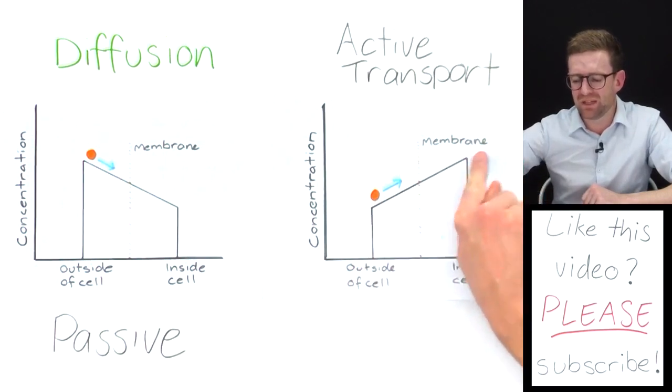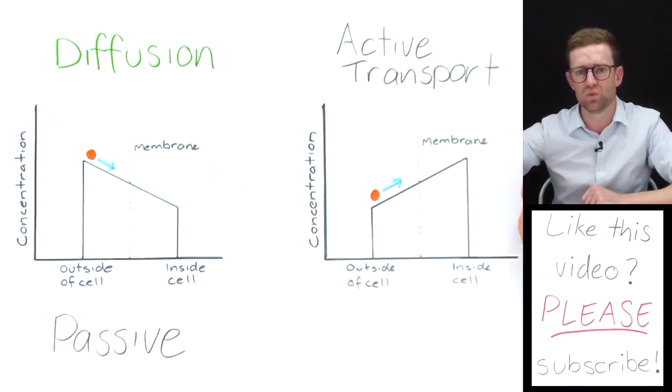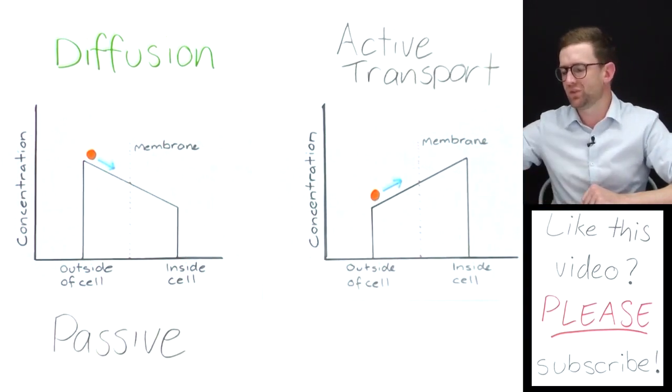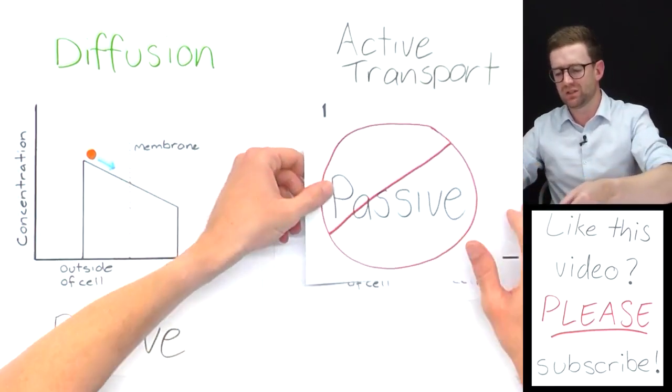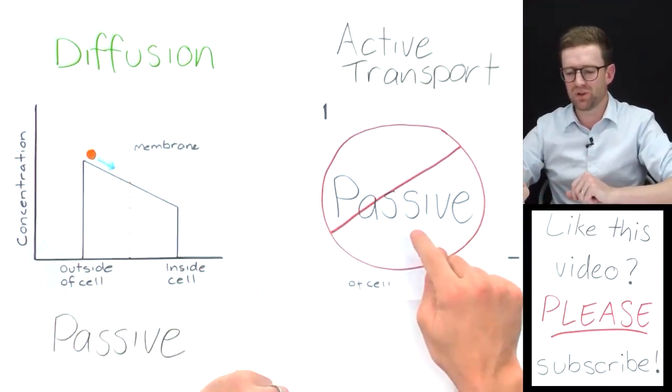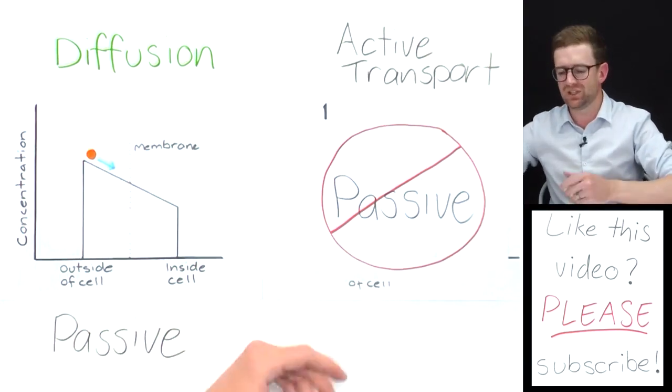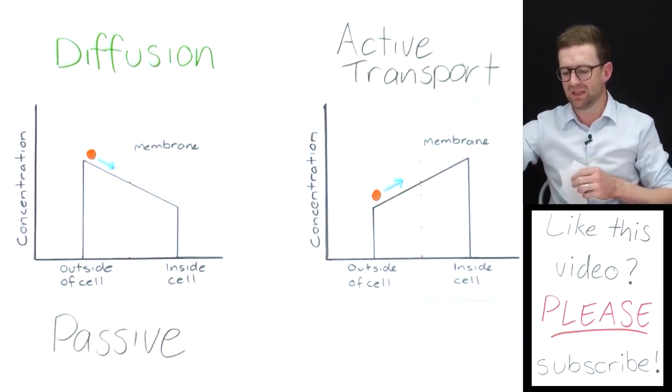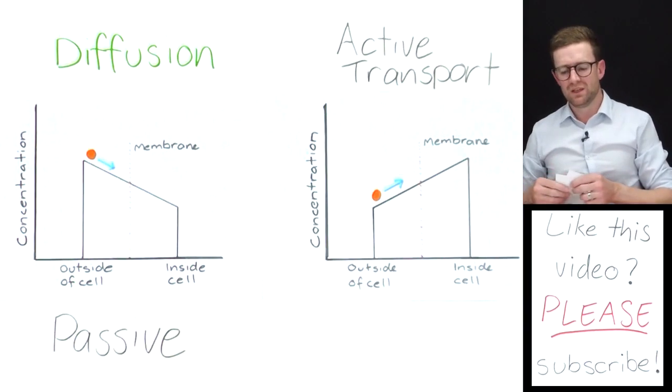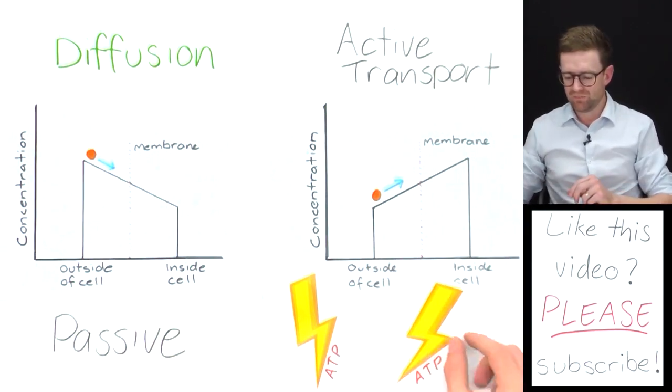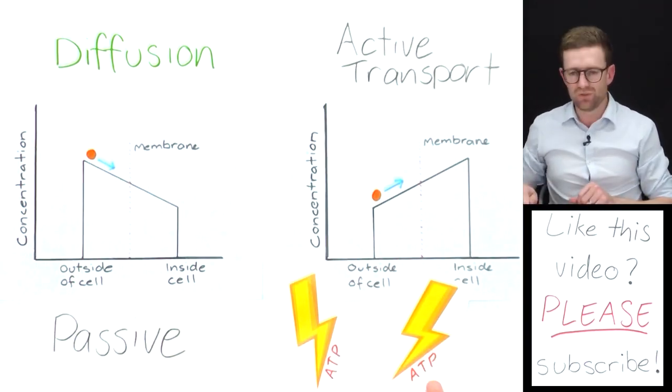It's pumping this substance uphill, which, if you haven't already worked it out, is not passive. This process of active transport requires energy because to move something uphill requires energy, and that energy is usually in the form of ATP.